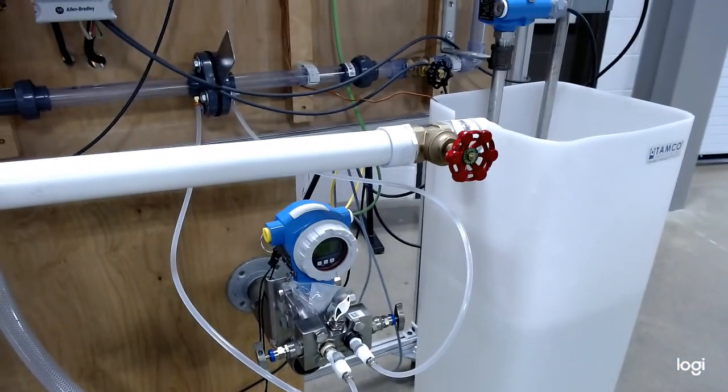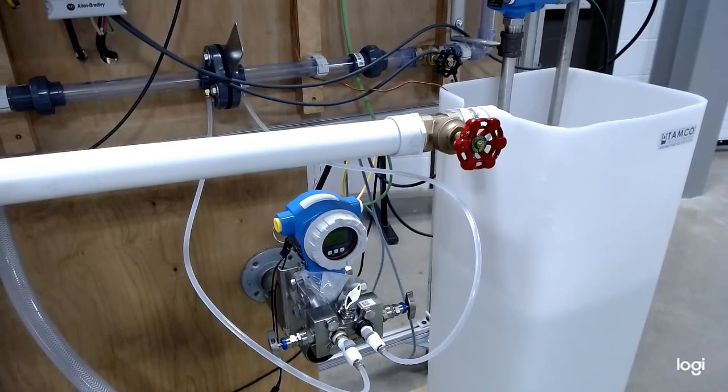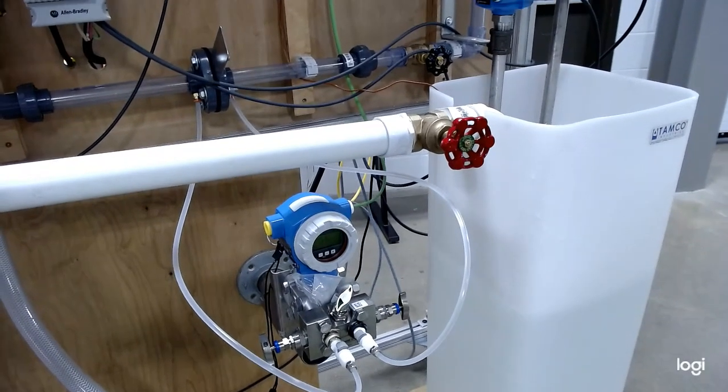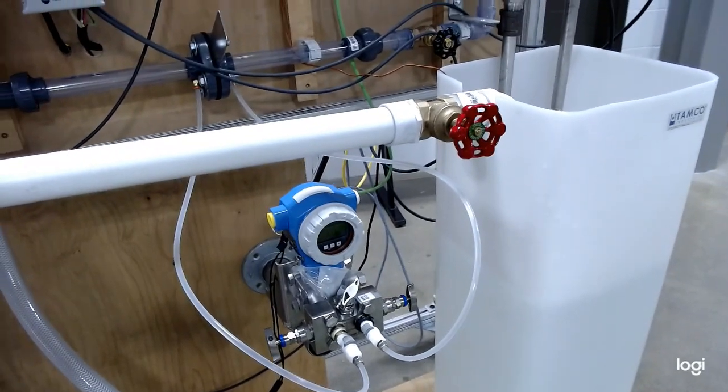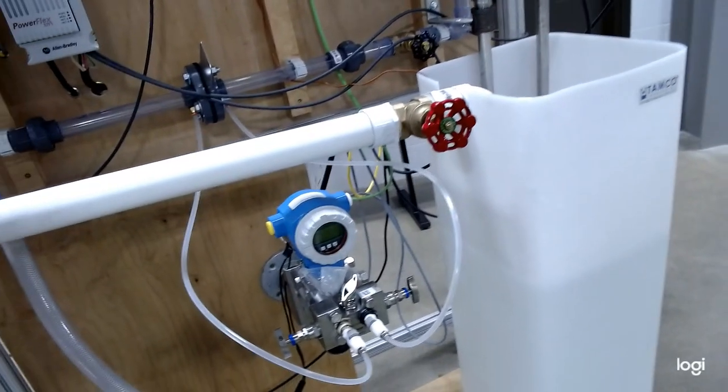To do that we actually needed to have water in the line. So we had the pump fired up and running and as there was pressure in this water line we went ahead and cracked open the bleeders on the back of the transmitter here.